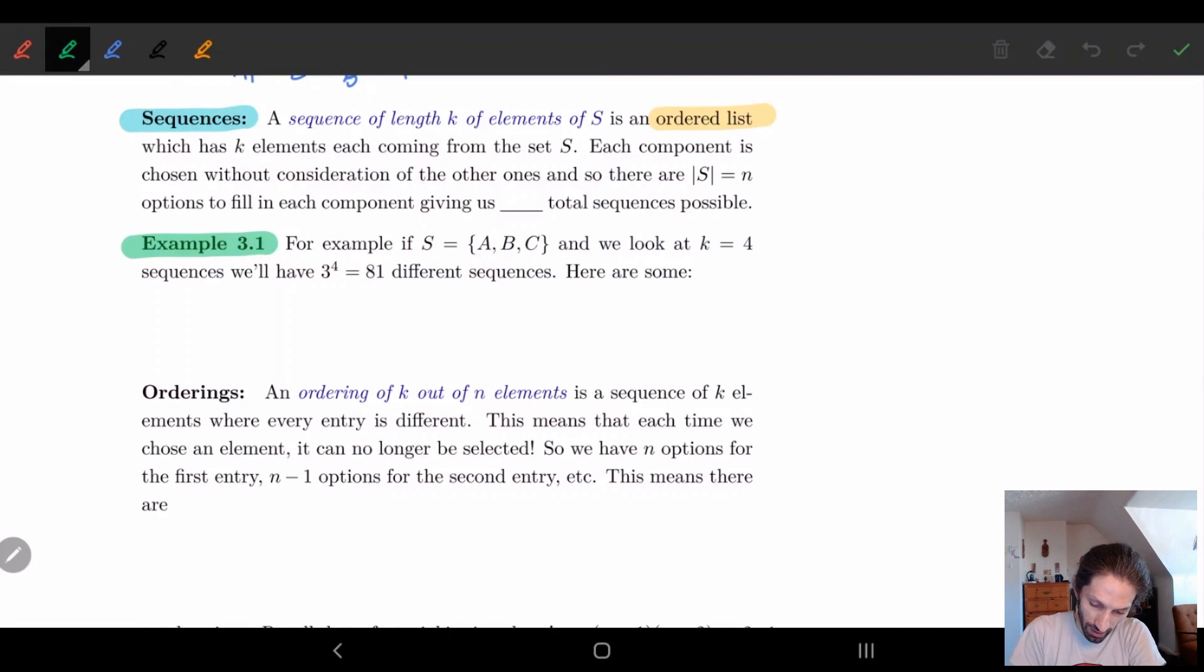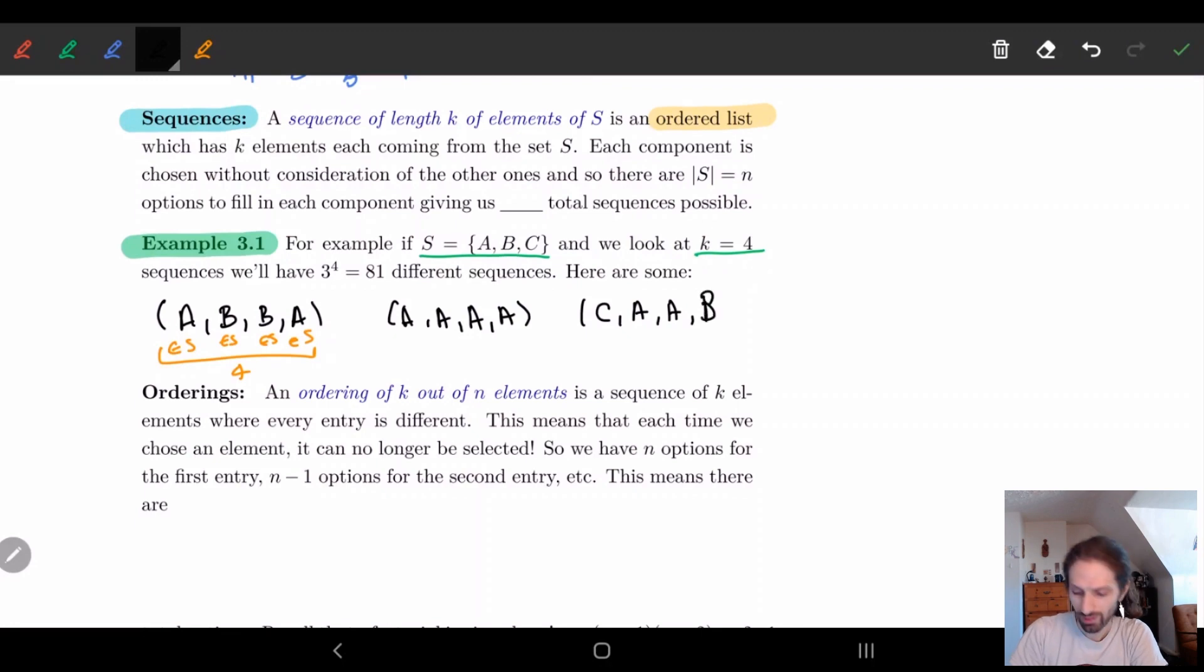So let's start off with this Example 3.1. In this case what we have is a set a, b, c and we're going to let k equal four. So basically what I want is some ordered list with four elements, each element coming from S. So here's one example: I can have a, b, b, a. So each element is in S and there's four objects here. Another example, I can do four a's. I can do a long version of cab. And then I can do like a cac.